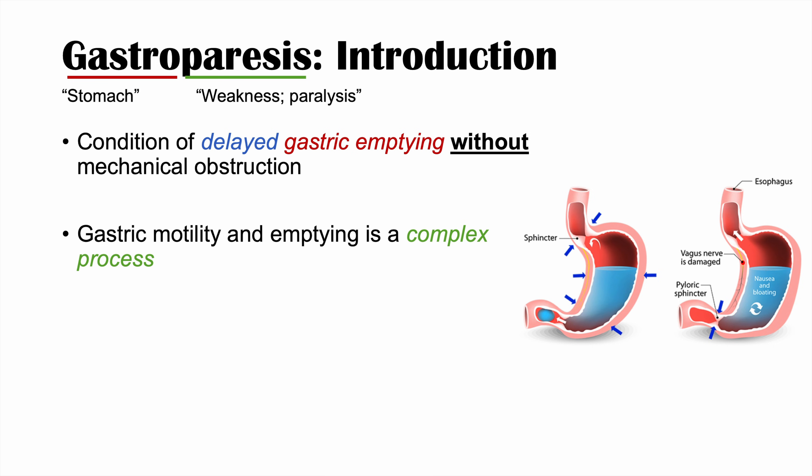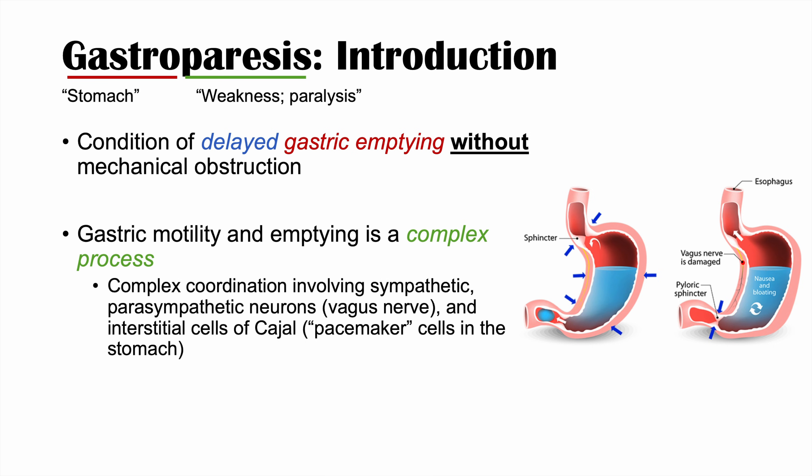Gastric motility and gastric emptying are complex processes. They involve complex coordination involving sympathetic and parasympathetic neurons like the vagus nerve, and require proper functioning of interstitial cells of Cajal — what we call the pacemaker cells in the stomach — allowing proper contractility.